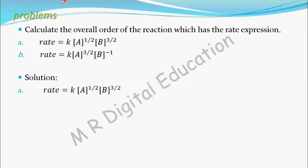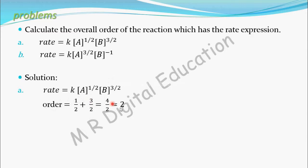Let's see the solution. He clearly given the rate expression, that is the rate law. Order is nothing but the sum of powers of concentration terms in the rate law. Sum of powers of concentration terms: 1 by 2 plus 3 by 2 equals 4 by 2, equal to 2. So it is a second order reaction.